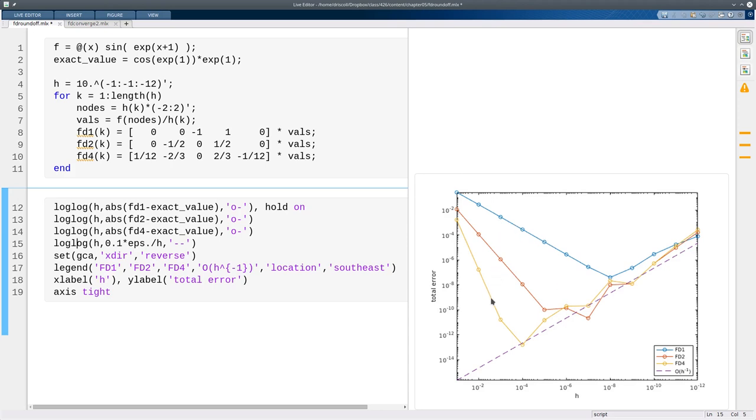For each of these methods, that occurs at a different place. So for the first order method, we reach approximately the square root of epsilon when the roundoff error starts to take over. And that's roughly the accuracy we can get in the best case.